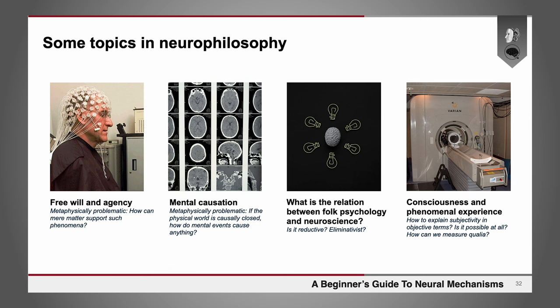One of the primary questions is about free will and agency. Free will and agency seem metaphysically problematic because how can mere matter support such phenomena? Especially if, as many scientists think, the world is deterministic. The problem of mental causation is also metaphysically problematic. For if the physical world is causally closed, how do mental events cause anything at all? And if they don't cause anything at all, why do we need to make reference to them? Maybe they're just epiphenomenal. So how do we explain mental causation in our scientific worldview?